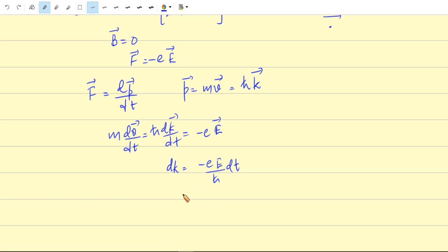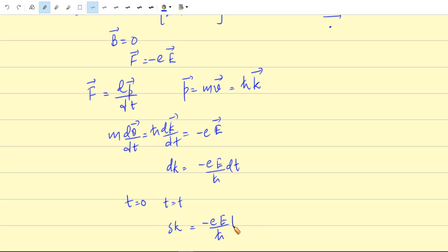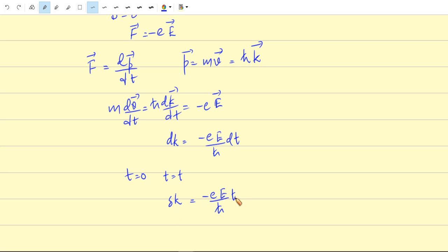When we integrate from time t=0 to t=t, when the electric field is supplied at time t=0, after a time t the wave vector is changed by eEt/ℏ. So this is the change in wave vector — in time t, the wave vector of each electron is shifted by a quantity -eE/ℏ multiplied by t.